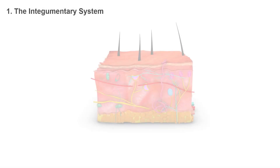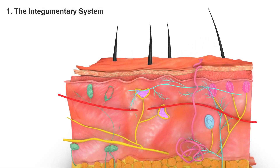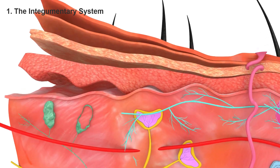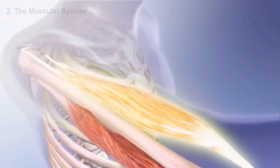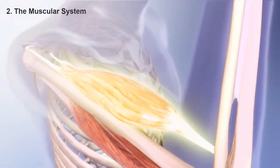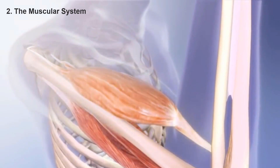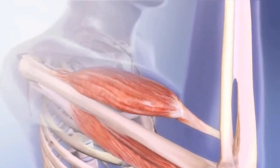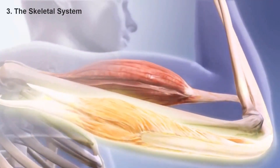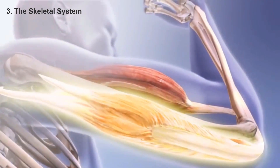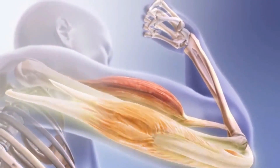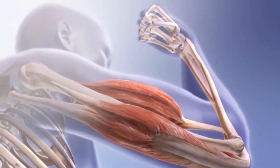The integumentary system has the main functions of protection and temperature regulation. The muscular system assists in movement and support and connects bones to one another as well. The skeletal system provides protection, structural support, and assists with movement and blood production.